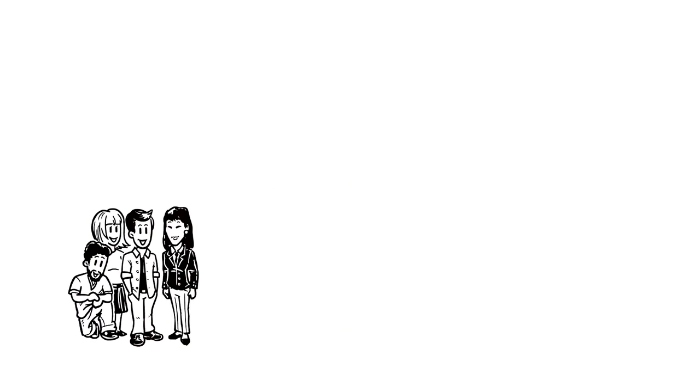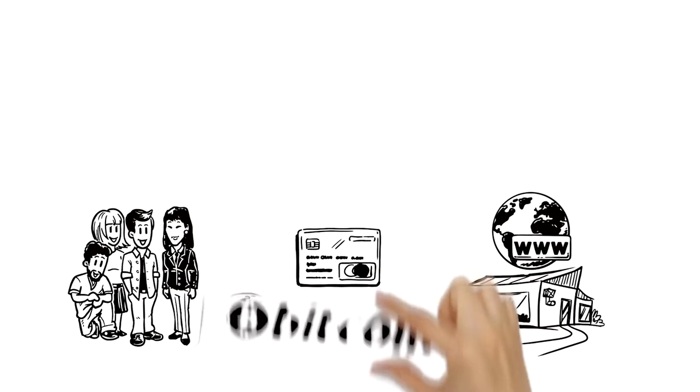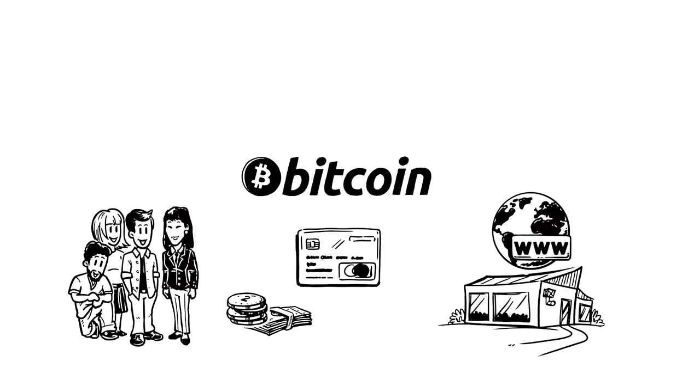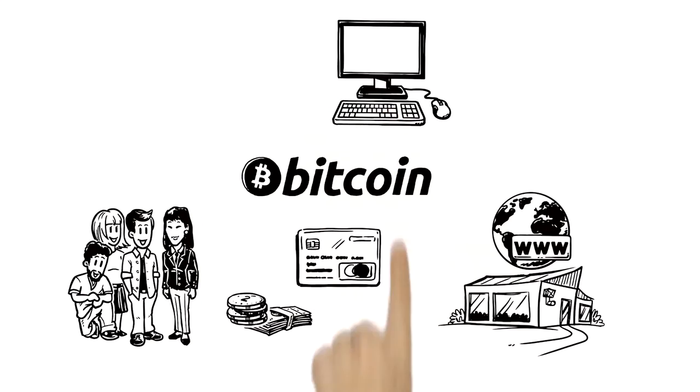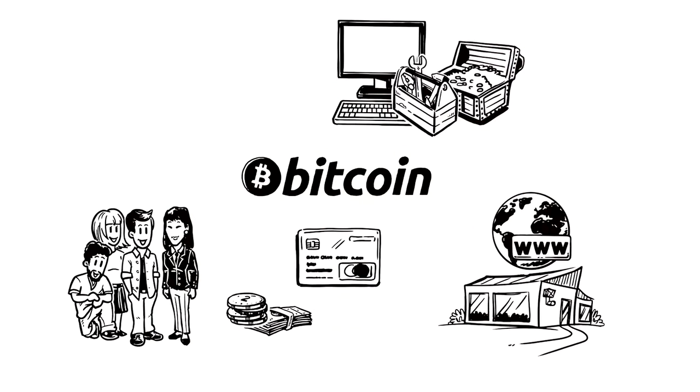Everyone knows about money. We use cash or cards to buy things, either in shops or online. Bitcoin works in a similar way but is a completely digital currency. It is created and stored electronically.